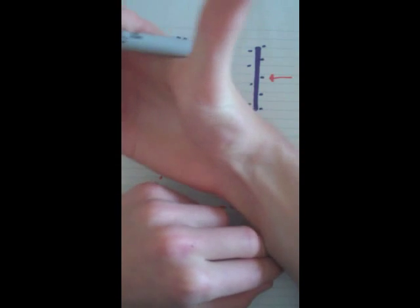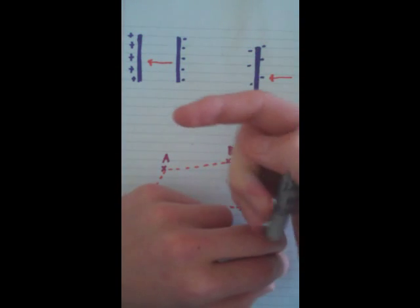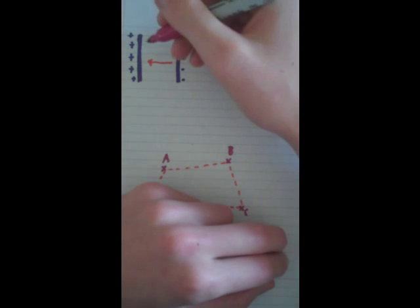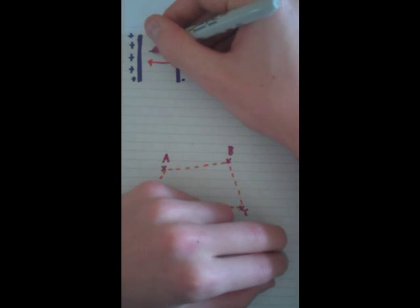So since the negative is pointing this way and we know positive points away from it, the electric field of the capacitor is going to be this way.